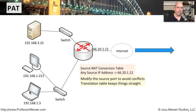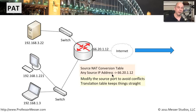Whenever you're dealing with network address translation or port address translation, it's that NAT table — that address lookup table inside the firewall or router — that keeps track of all of this. It becomes extremely important for matching where traffic is coming from internally and where it's going. You'll very often see a log created that has both the pre-NATed address and port and the post-NATed address and port, so you can correlate them later.